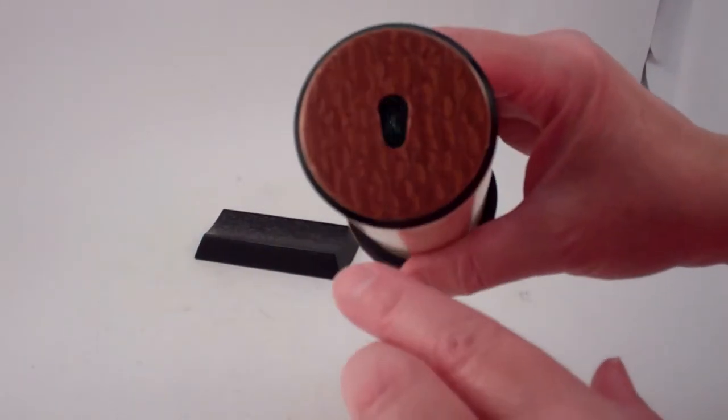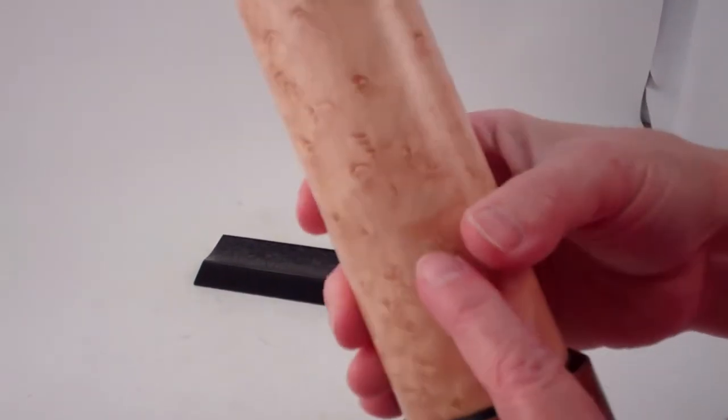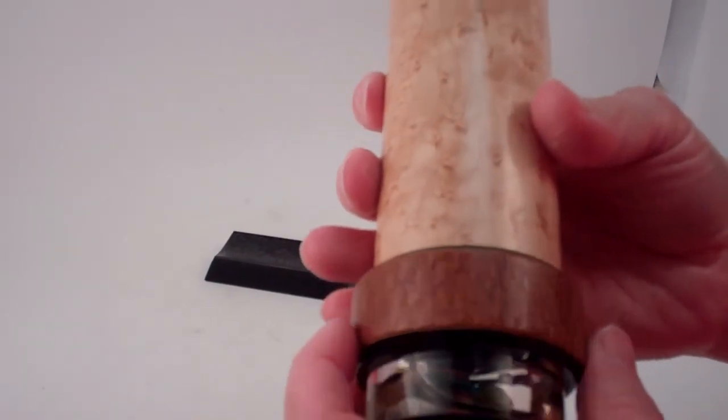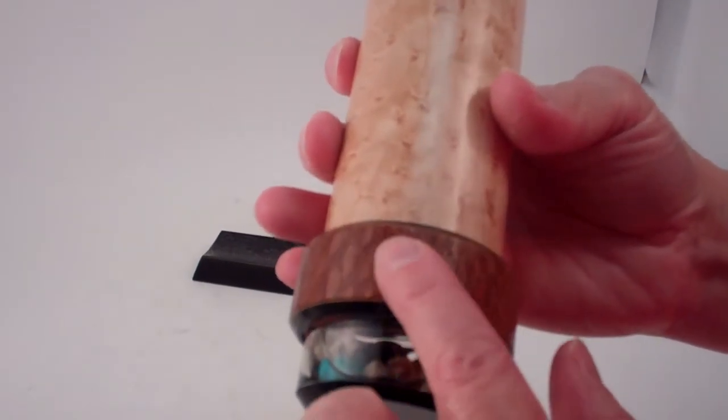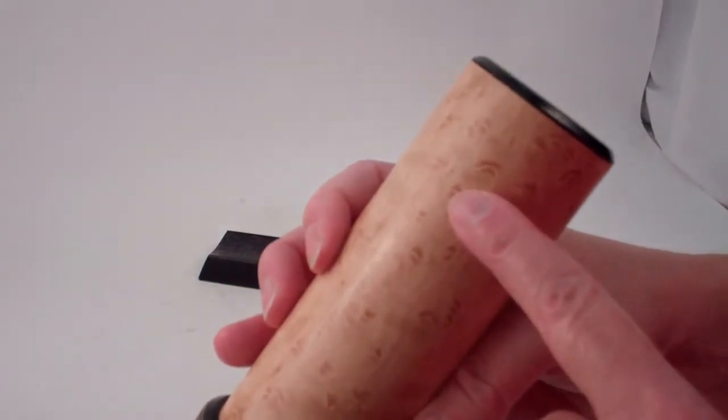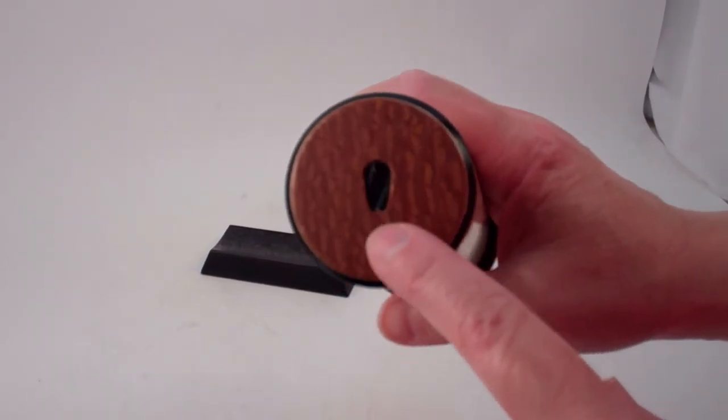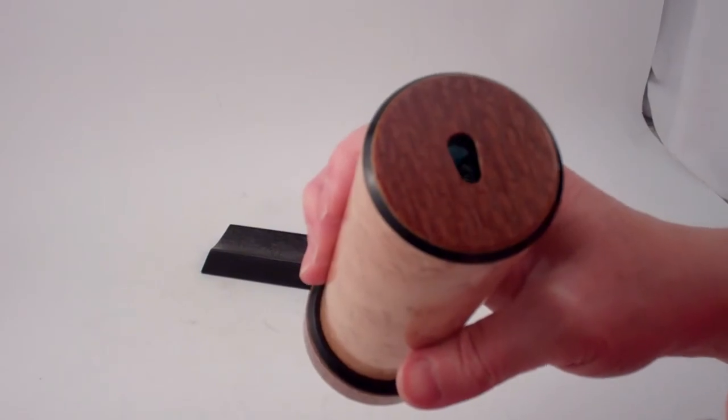Now the exterior of the kaleidoscope features veneers of beautiful figured hardwoods and this one looks like a lacewood veneer and a bird's eye maple veneer and then the complementing lacewood veneer at the eyepiece as well.